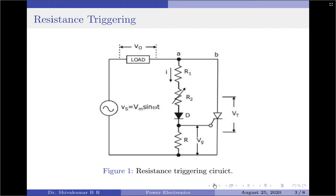The circuit shown here is an experimental setup in which, instead of using a gate pulse to trigger an SCR, the gate current is supplied by an AC source voltage Vs through R1, R2, and the series diode D. The elements of the circuit are: R1 is the gate current limiting resistance, R2 is used to vary the gate current and hence the firing angle, R limits the voltage at the gate terminal, and diode D prevents buildup of negative voltage at the gate terminal.